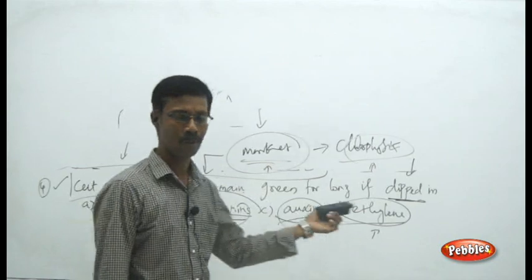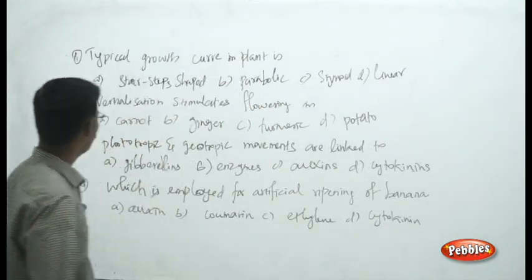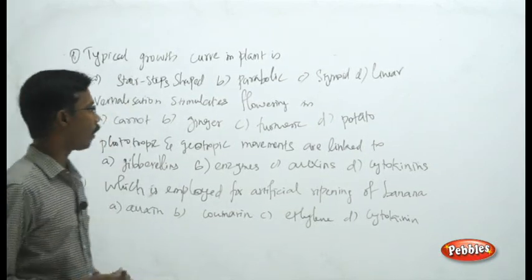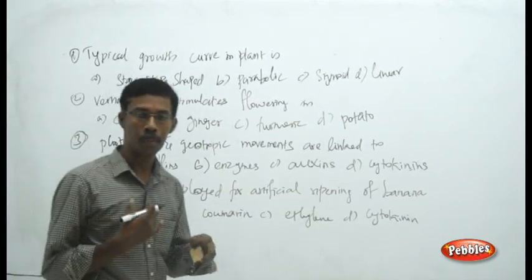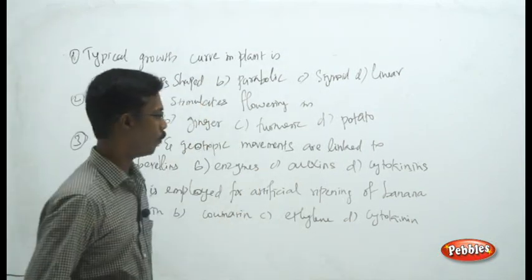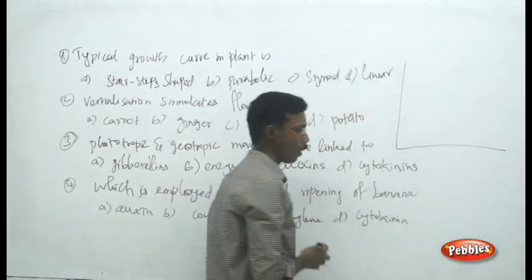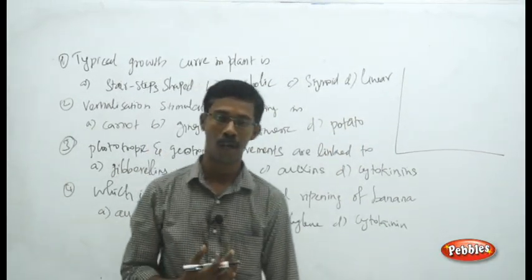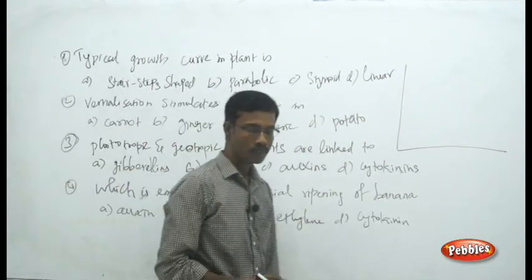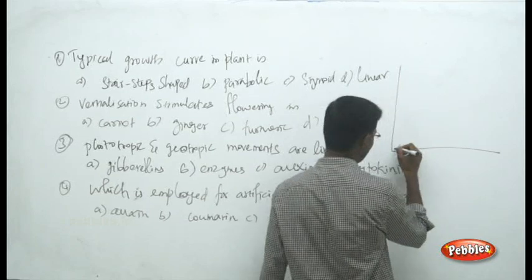Now, the next question: the typical growth curve in plants. This question is about the shape of the plant growth curve. There are many types of growth patterns we can observe: arithmetic, geometric, linear, sigmoid, and others. Linear growth means from zero time the growth is enormous with no inhibition or adaptation — from the starting point it is in a logarithmic phase, which is not possible in a normal environment.